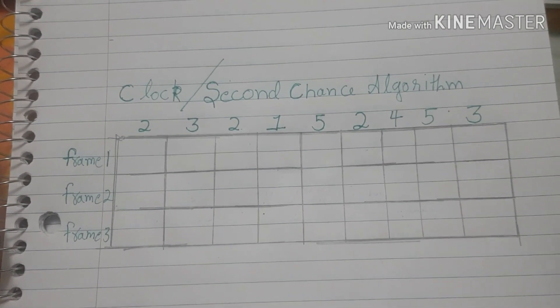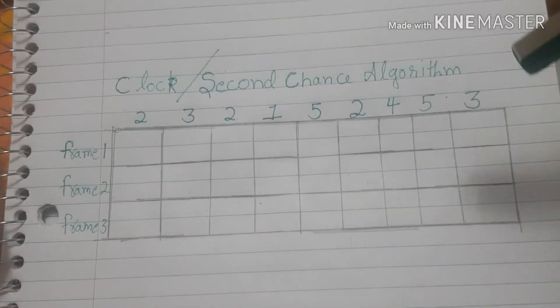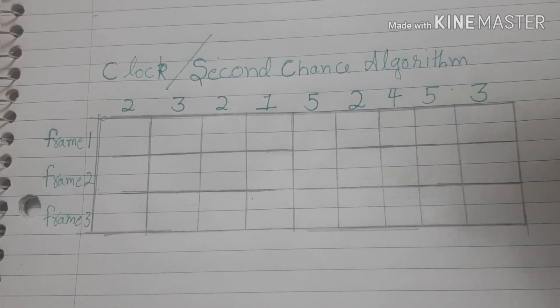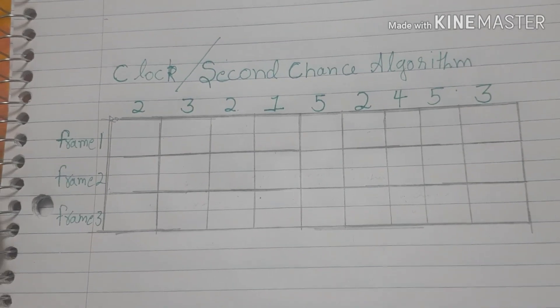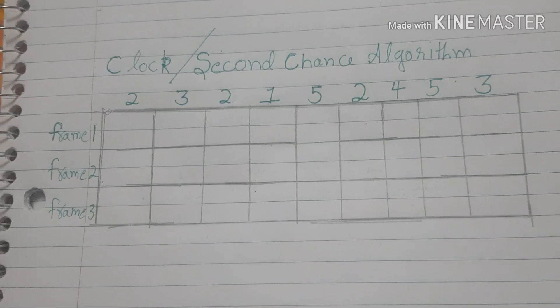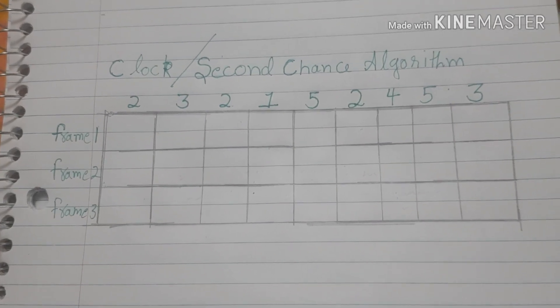We follow the basic first in first out procedure to fill the table, but what happens is whenever we have to replace a page from a frame, we just give it a second chance before actually replacing it, and on what basis that chance is given I'll discuss later in the video.